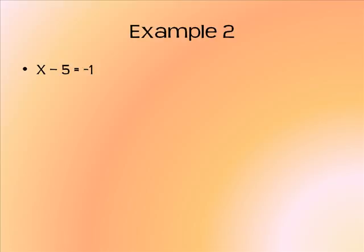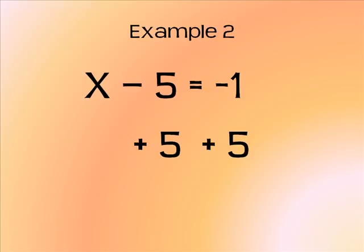Our next example is x - 5 = -1. Again, we're going to use the opposite of negative 5, which is positive 5.